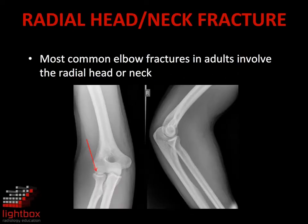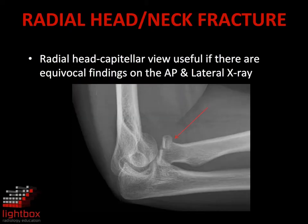In adults, the most common injury of the elbow is a fracture of the radial head. These appear as cortical disruption, linear lucency, or impaction sclerosis. It is important to assess for intra-articular extension. If minimally displaced, these fractures can be difficult to visualise, and the radial head-capitellum view is often useful. Usually these fractures are within the joint capsule and associated with a haemarthrosis.